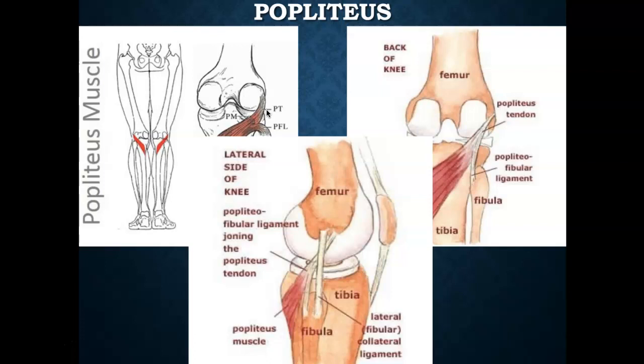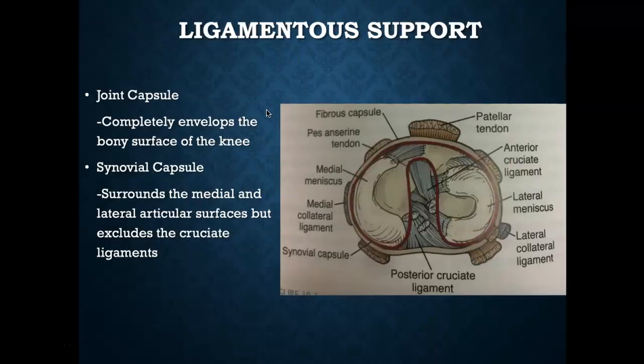The screw home mechanism's major role is to ensure the knee gets into terminal extension — its most stable position. The popliteus is a major unlocker of the knee in the open kinetic chain, specifically when the knee is in full extension and needs to move into flexion.